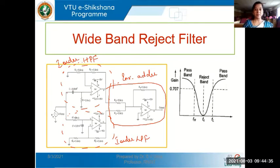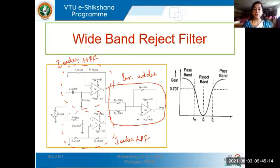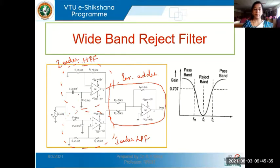In the high pass filter, the capacitor is the series element, R is the shunt element, and we have a non-inverting amplifier with gain 1 + RF/R1. RF is 5.6K, R1 is also 5.6K, so 1 + RF/R1 becomes 2. The second one is a first order low pass filter. They are first order filters because they use a single RC section, giving a transfer function V0/VI with a single pole — only the S-power-one term — which is the Laplacian parameter.